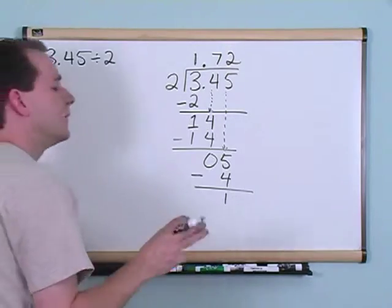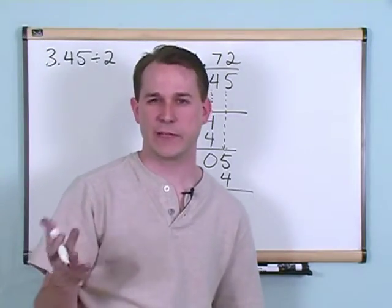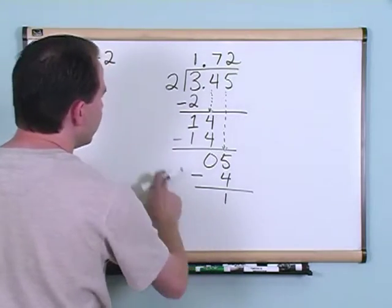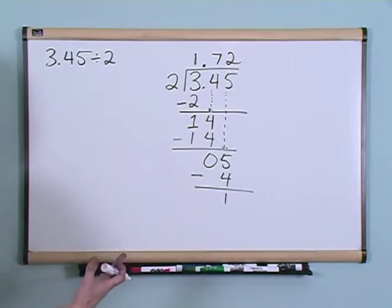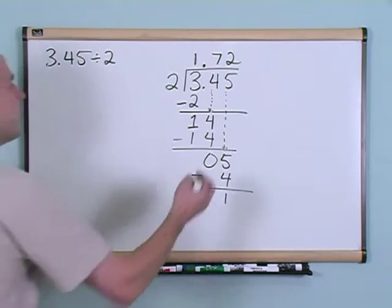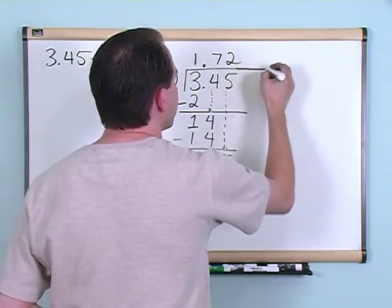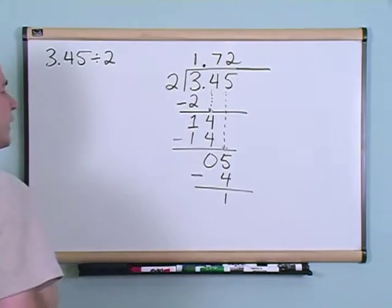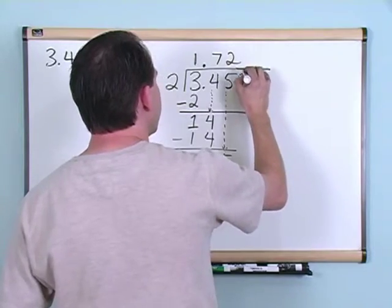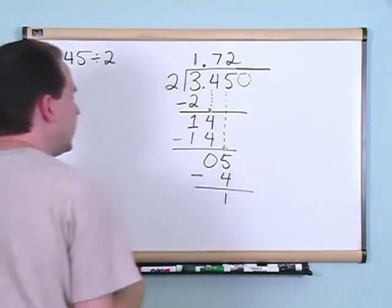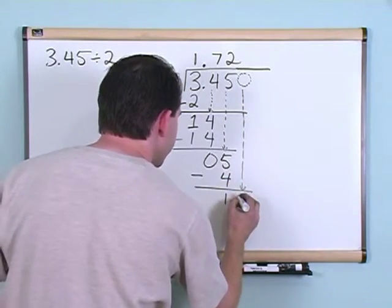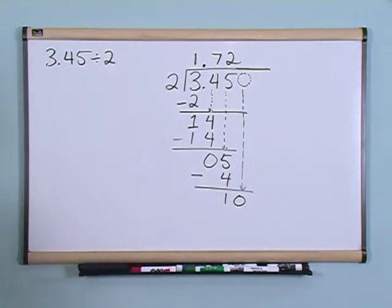Now here's where the decimal stuff starts to get a little bit tricky. The next thing we do is we try, will 2 be divided into 1? Well, the answer is no, you can't do that. But in decimals, there's no more digits over here that you can drop down to help yourself. But in decimals, you're allowed to add a 0. In fact, you're allowed to add as many 0s as you need. So what we're going to do is add a 0 up there and drop that 0 down and make it a 10.